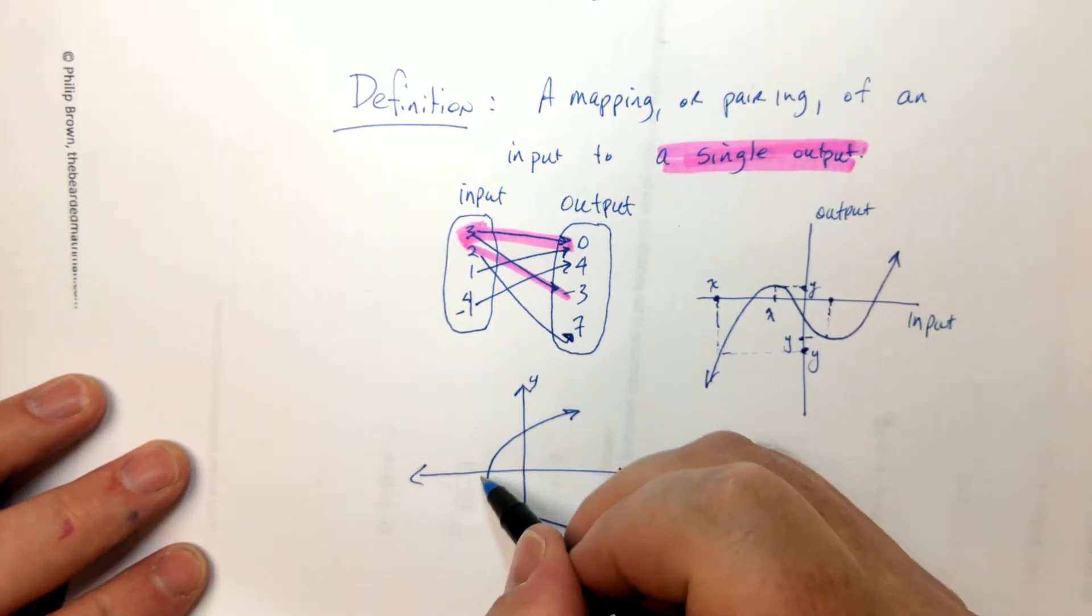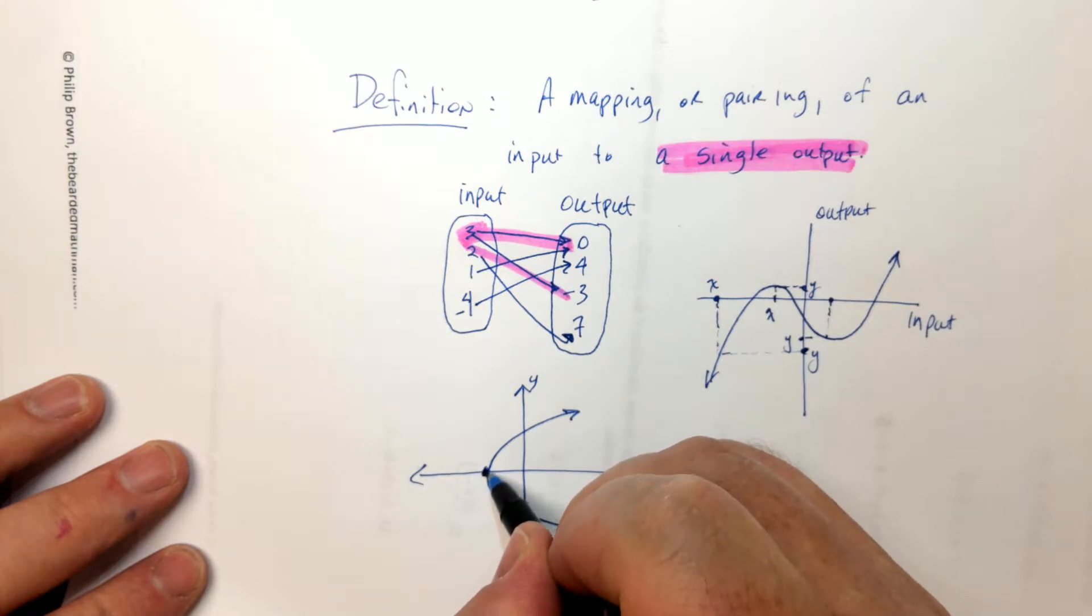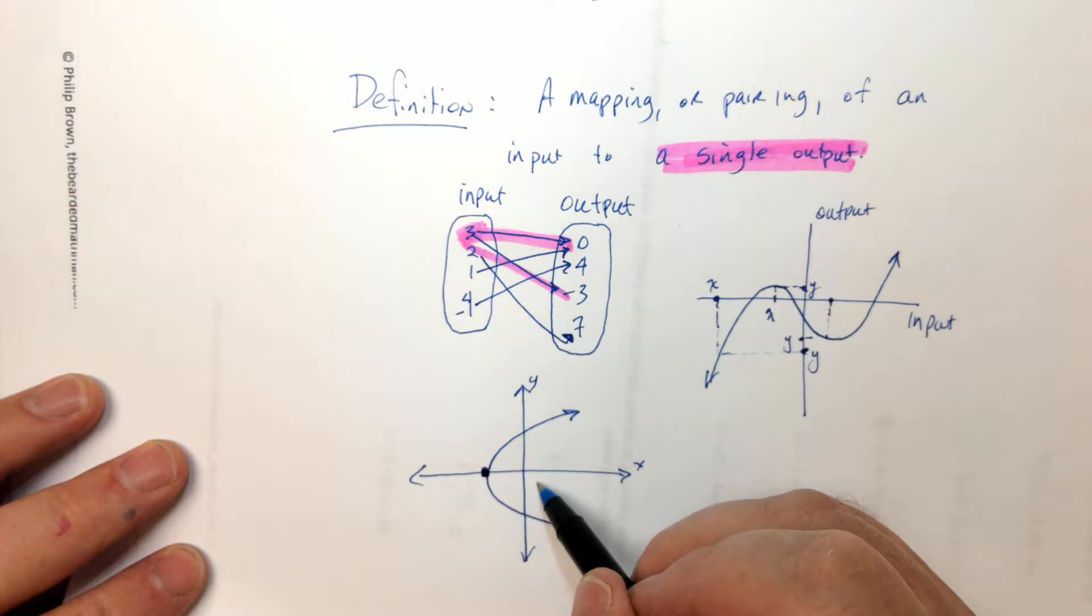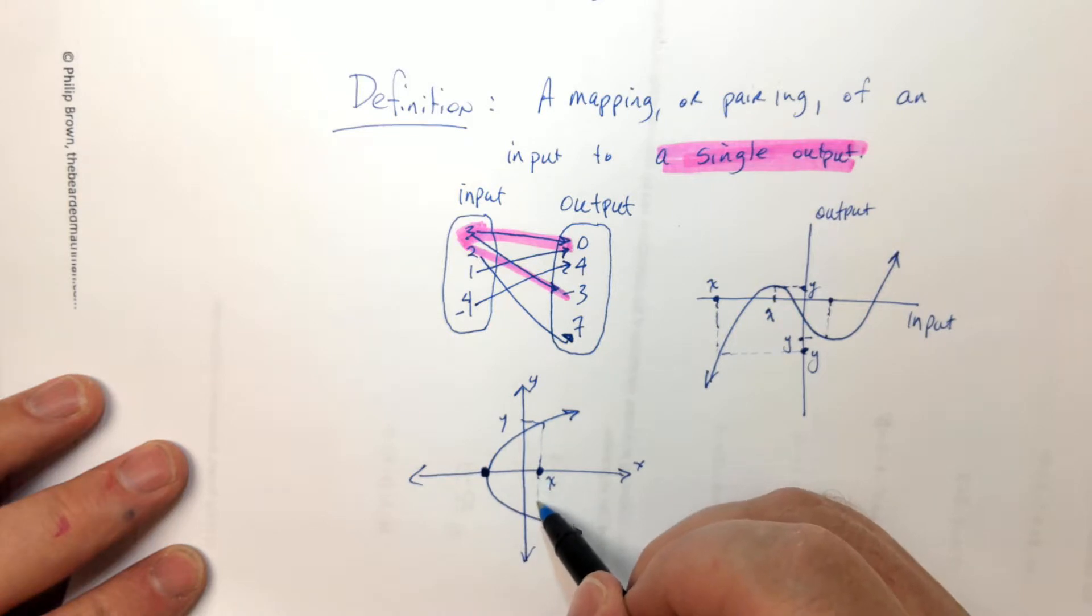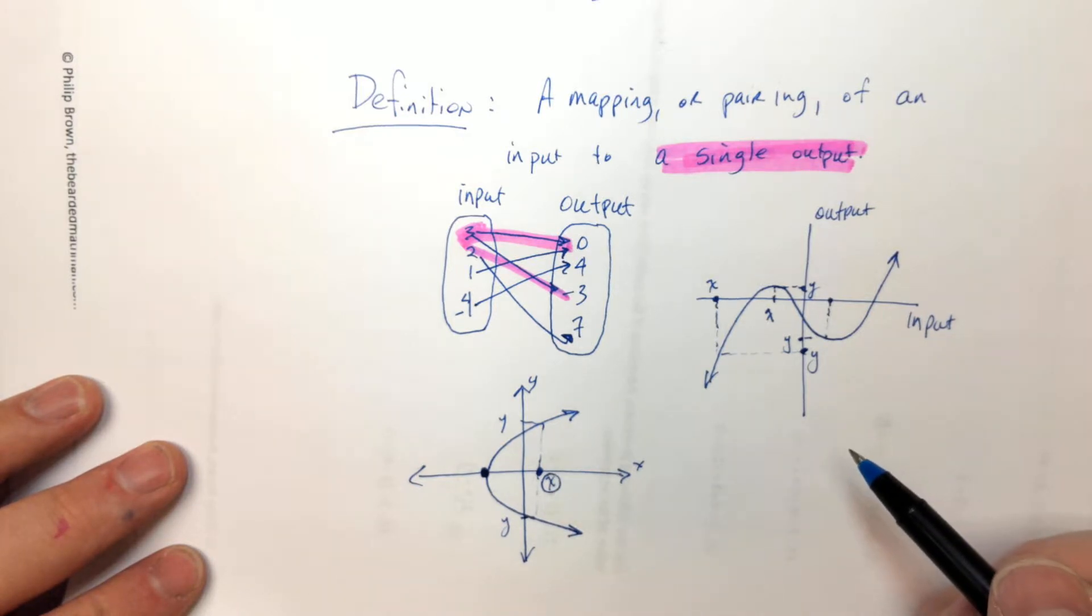This is a not function. There's only one place that an input has one output. It's right there. This value of x only has one output, but like, do you see this value of x right here? It's got two outputs. Do you see? There's two outputs for this one input. It's not a function.